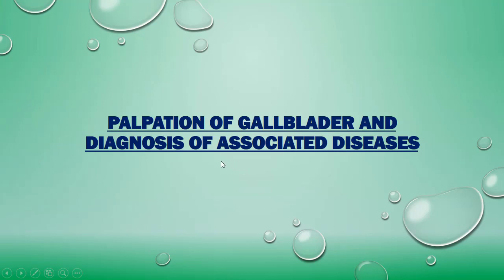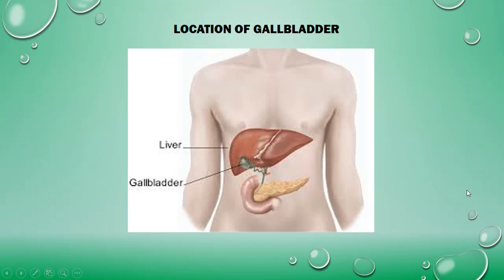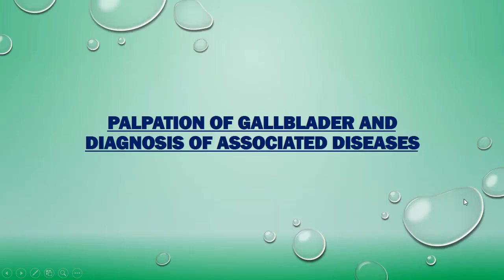In today's video we will discuss the palpation of gallbladder and diagnosis of its associated diseases. Before starting, some basic points to keep in mind while palpating any organ of the anterior abdominal wall: we have to notice and feel tenderness, voluntary guarding, rebound tenderness, involuntary guarding, tenderness plus rigidity, and palpable mass.